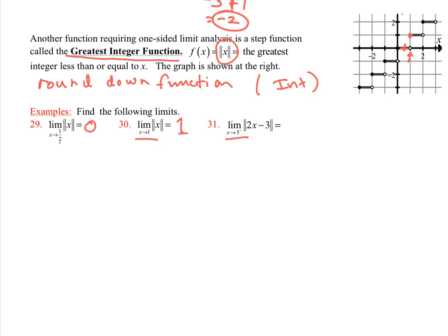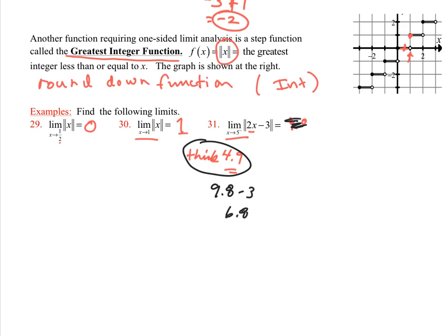For a one-sided limit like x approaches 5 from the left in the greatest integer function, think of a number slightly less than 5, like 4.9. Plugging 4.9 in: 2(4.9) - 3 = 9.8 - 3 = 6.8. Rounding that down gives 6. If I thought of exactly 5, that would give 7, but since I'm approaching from the left and below 5, it rounds down to 6.